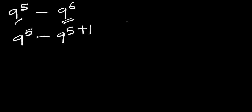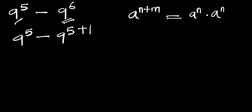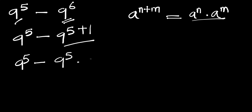Let's consider this identity: if you have a to the power of n plus m, this equals a to the power of n times a to the power of m. We apply this identity right here and we are going to have 9 to the power of 5 minus 9 to the power of 5 times 9 to the power of 1.